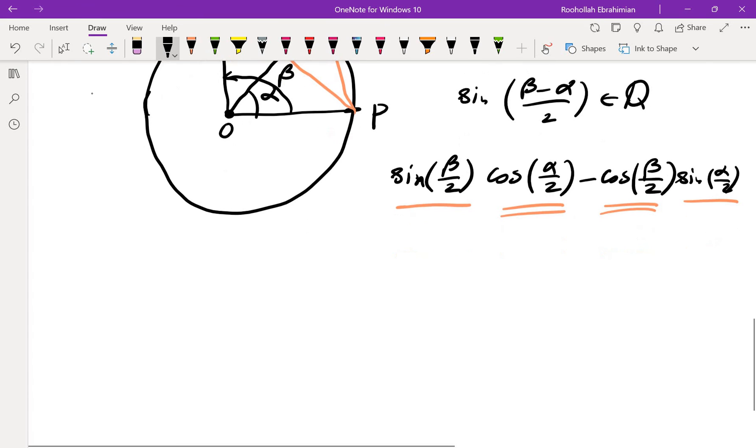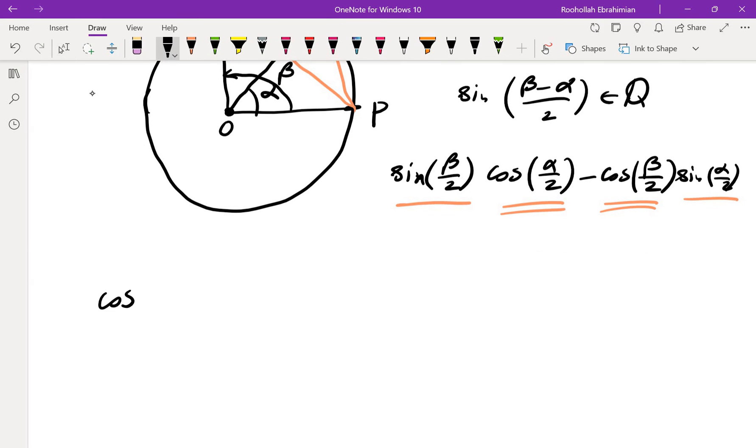So we're going to choose the angles in a way that cosine of each one of these angles, alpha over 2, and sine of these angles, alpha over 2, follow those formulas.